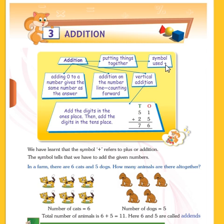We are using this plus symbol for addition. The next is adding 0 to a number gives the same number as the answer. If we add 0 to any number, we will get the same number only. We can't add or subtract 0 from any number. For example, if we have 2 and we add 0, we will get only 2.